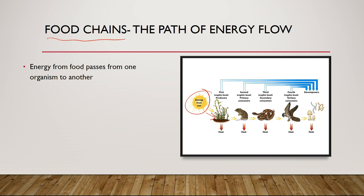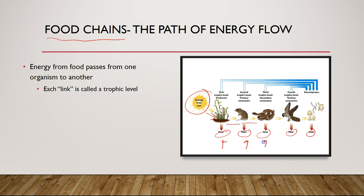The plants use that energy for themselves first, but some of the energy does get locked up in the tissues of the plants — the biomass. Once it's been converted to a form that can be used by other organisms, it passes up the food chain, and we're losing a little bit to heat along the way. Each of these links are what we call trophic levels.